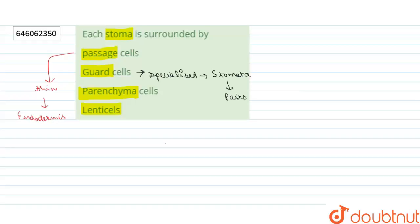They are kidney-shaped cells. Now option number three is parenchyma.